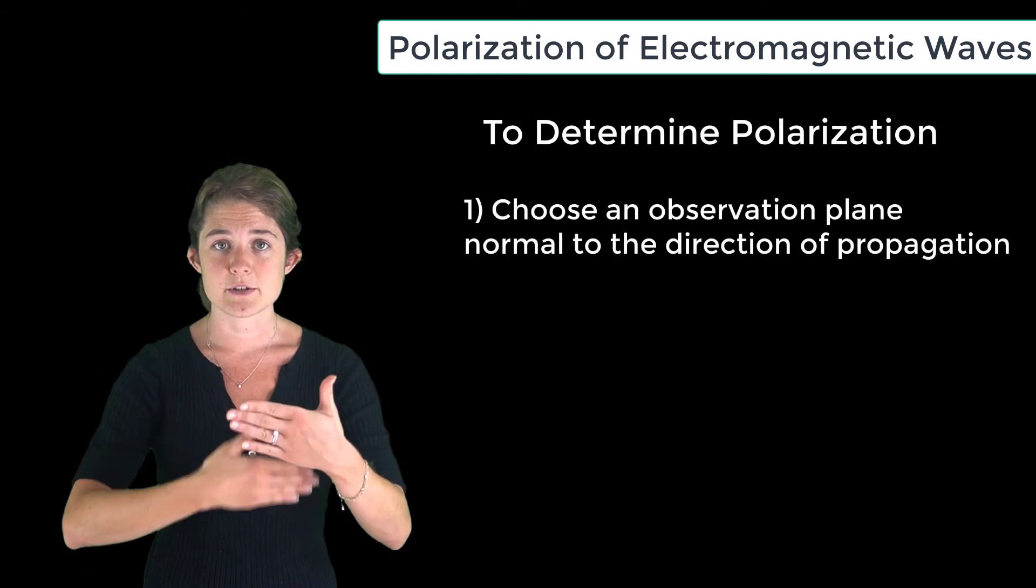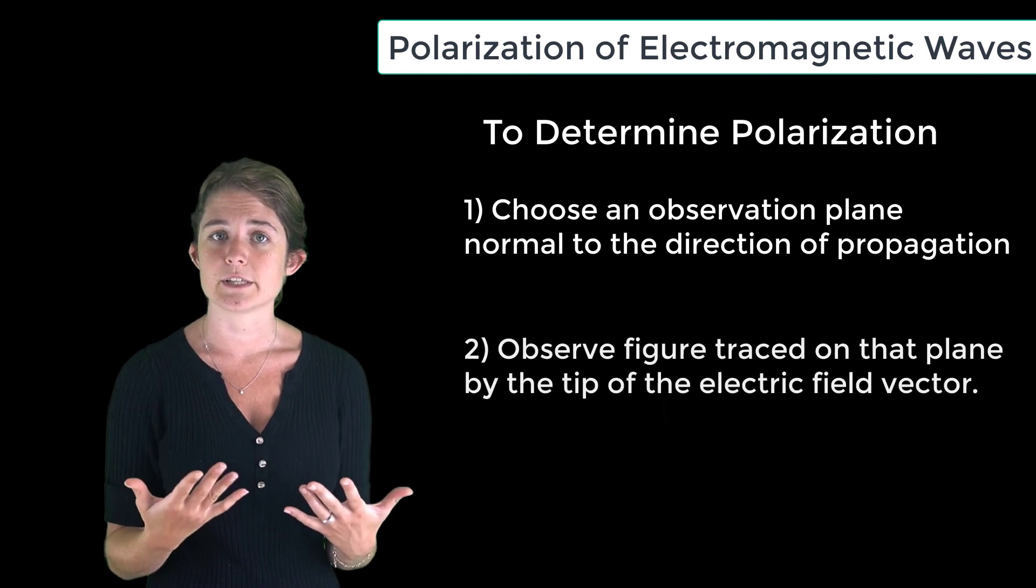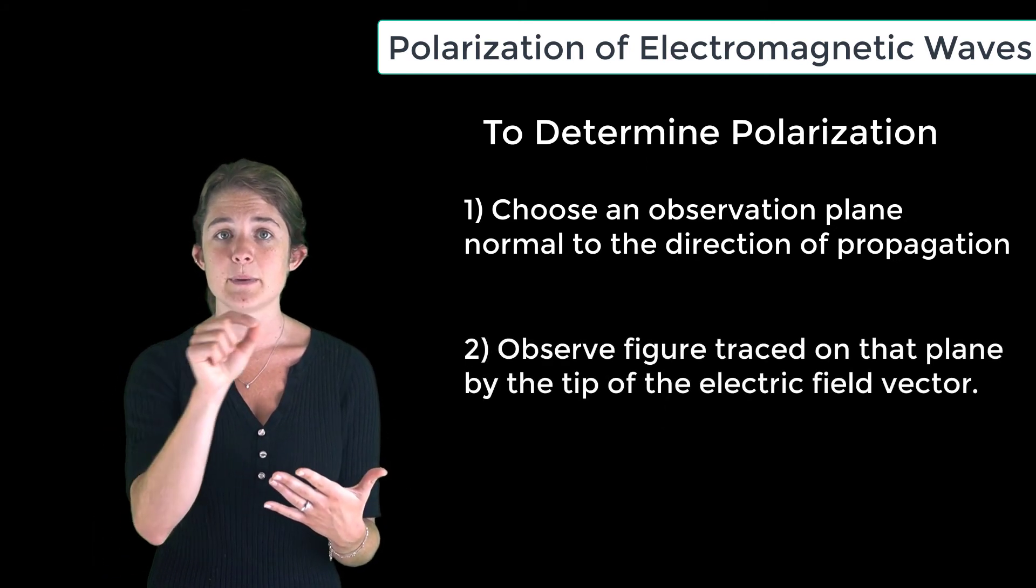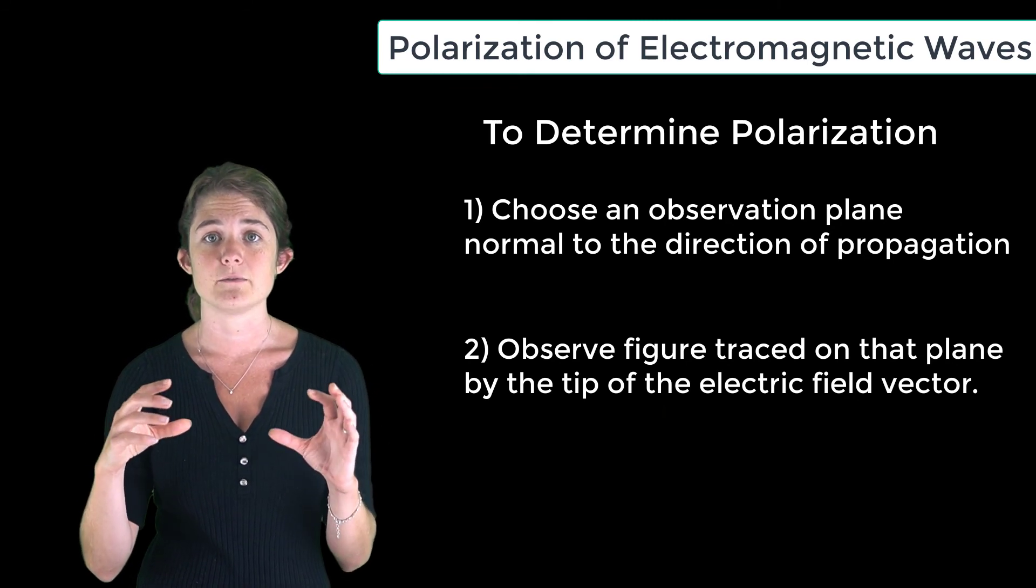to always choose an observation plane normal to the direction of propagation. Then you can determine polarization by plotting the time-domain electric field and observing the figure traced by the tip of the electric field vector.